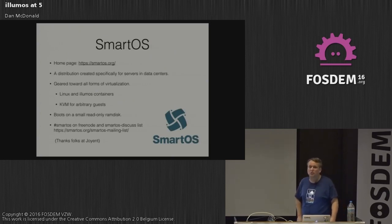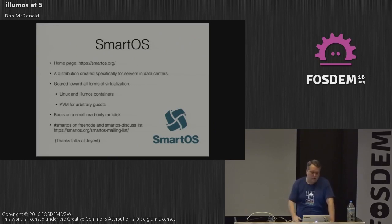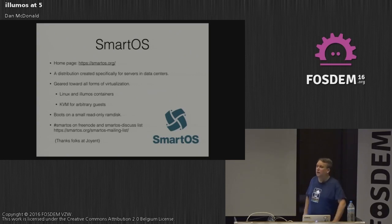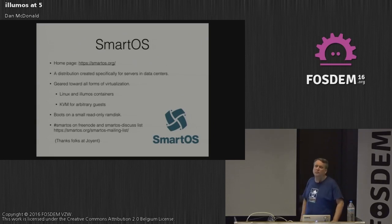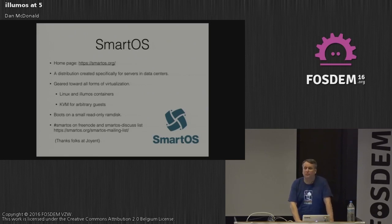Joyent SmartOS has its own .org page, even though they build all their products around it too. Everything Joyent does is open; if not under CDDL, for their more recent user land they've adopted Mozilla Public License version 2. It's geared toward servers, data centers, and clouds — all forms of virtualization. Everything runs outside the global zone, and they also have KVM zones for arbitrary guests. SmartOS is interesting: you plug in a USB stick, it loads into RAM as a RAM disk and is up and running. Any spinning rust on a SmartOS machine is just storage.